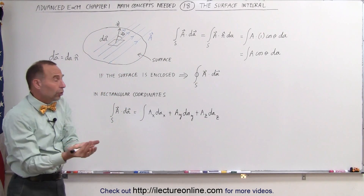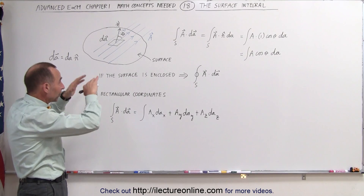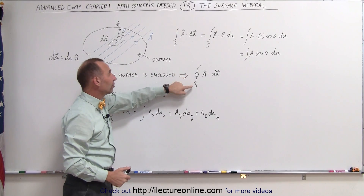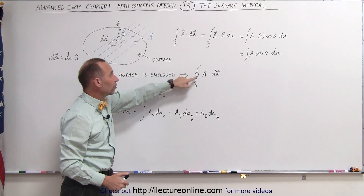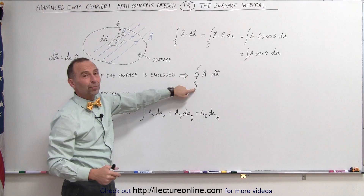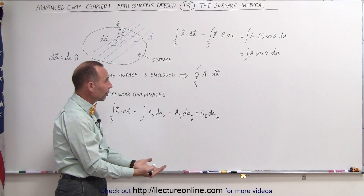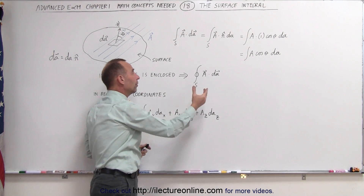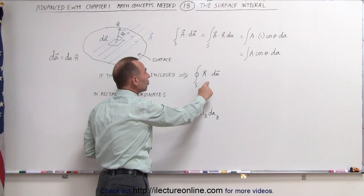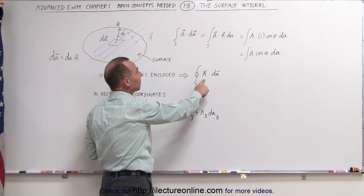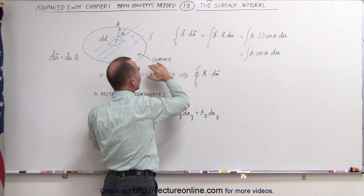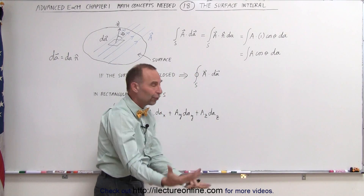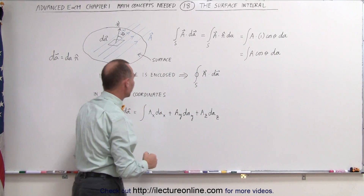If the surface is fully enclosed, like for example a sphere, then the integral symbol is written with a little circle there. That simply means that the surface is complete and fully enclosed, but the methodology will still be the same — multiplying the vector field A times the area element and then integrating over the entire surface.